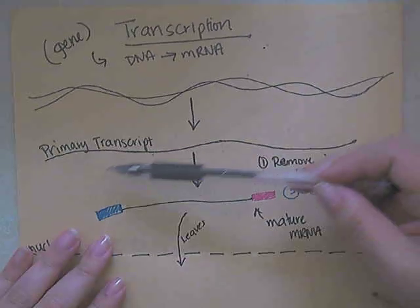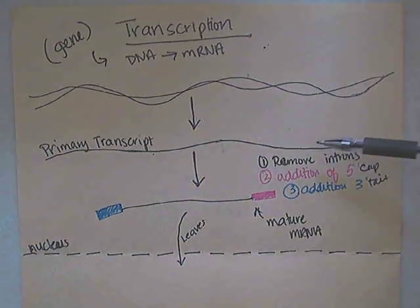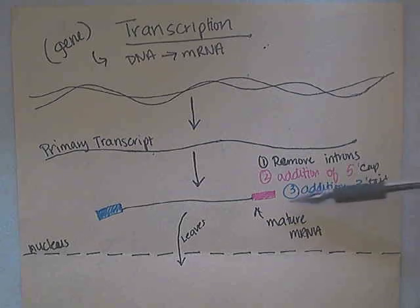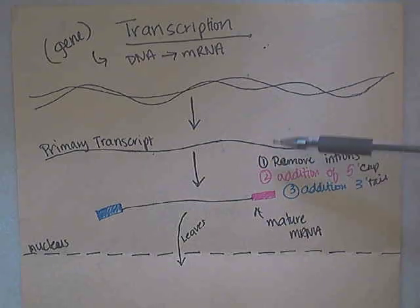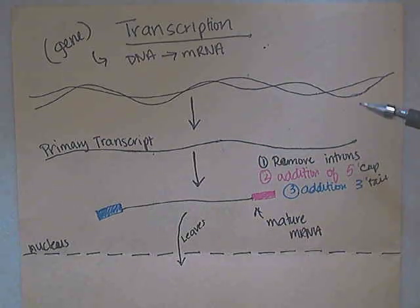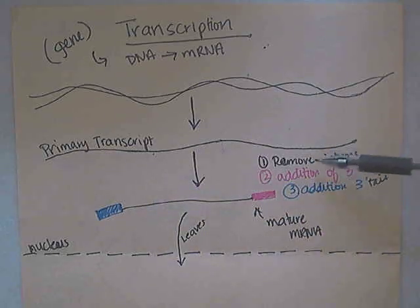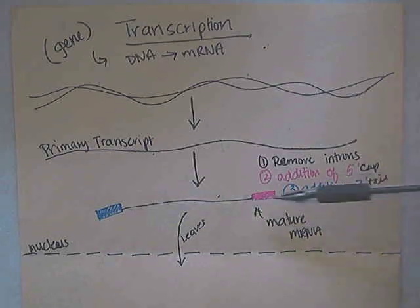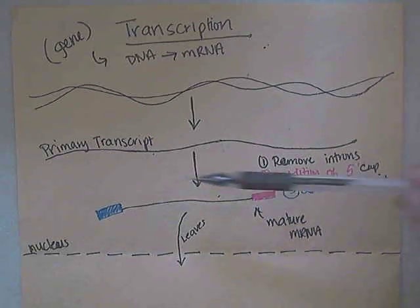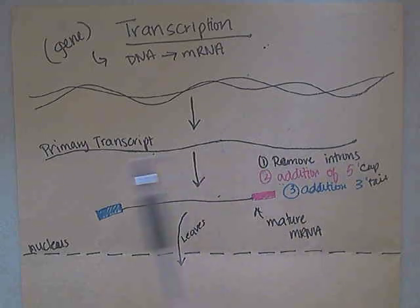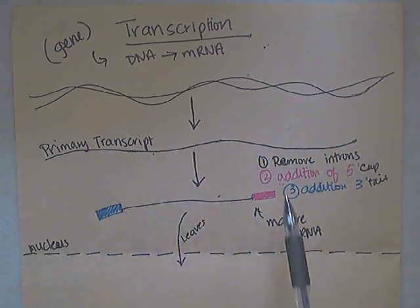Then we took that mRNA, the rough draft, which is also known as your primary transcript, and we did some modifications to it — some processing. We removed the introns, we spliced together the exons, we added the 5' cap and the 3' tail, and now we have the mature mRNA. It's shorter because we removed the introns completely from that primary transcript, and so what's left are just the exons.